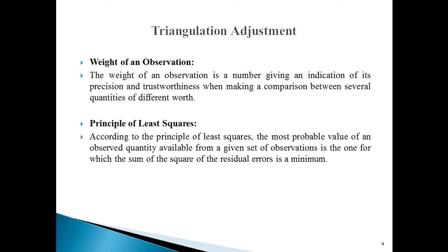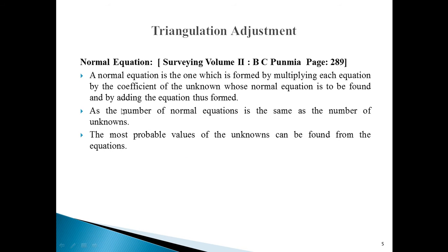The principle of least squares is used to find the normal equation. According to this principle, the most probable value of an observed quantity from a given set of observations is the one for which the sum of squares of residual errors is minimum. We focus on the set of observations and select the value with minimum error.